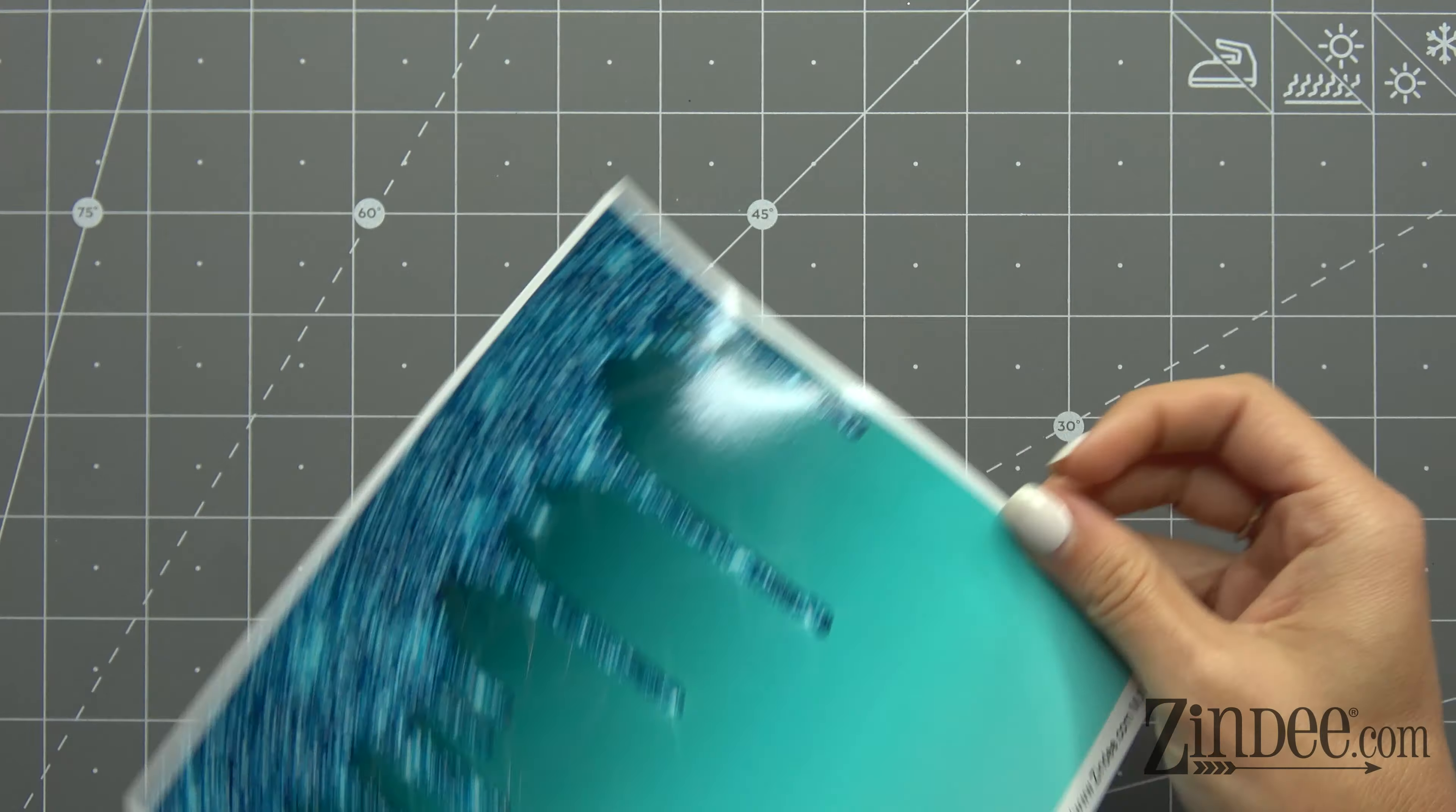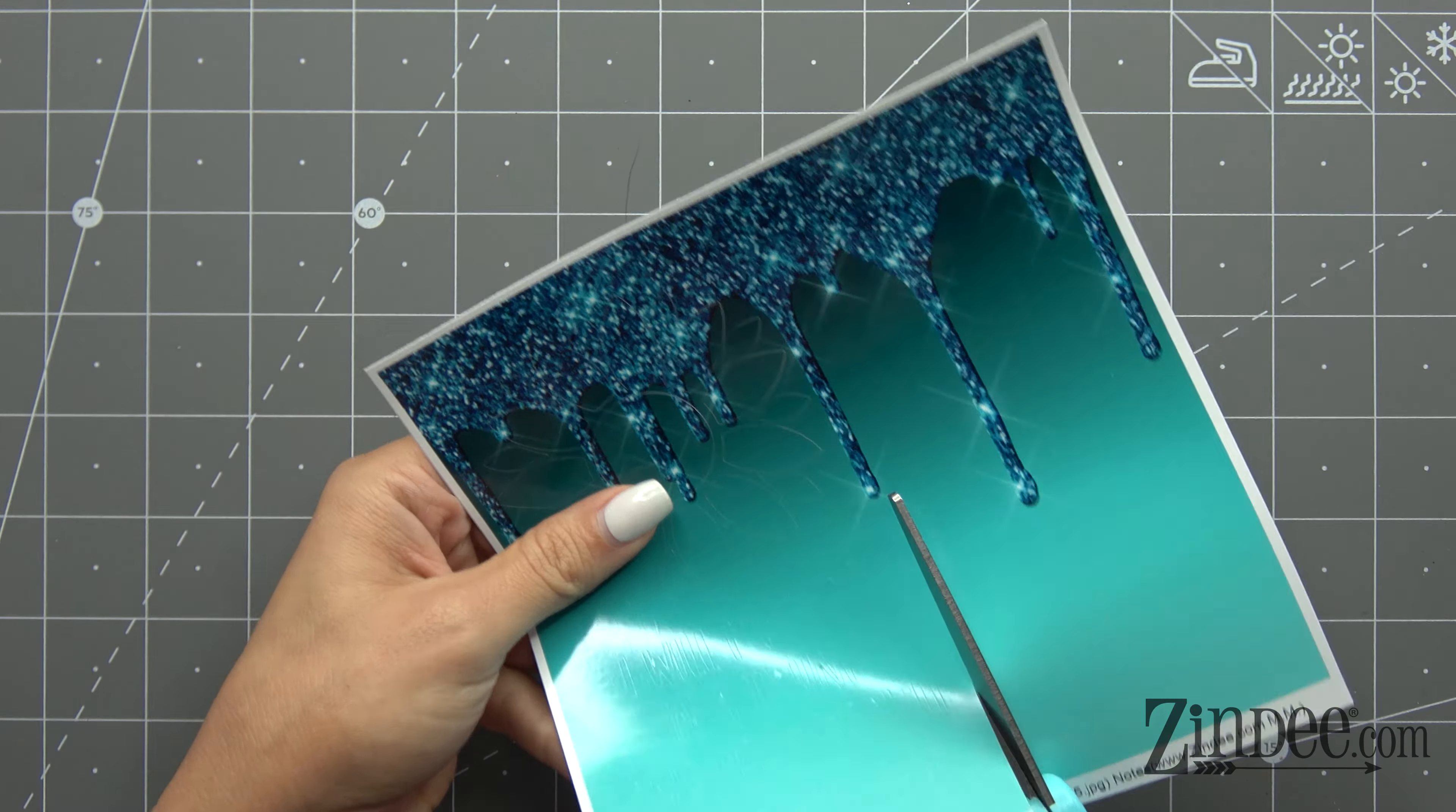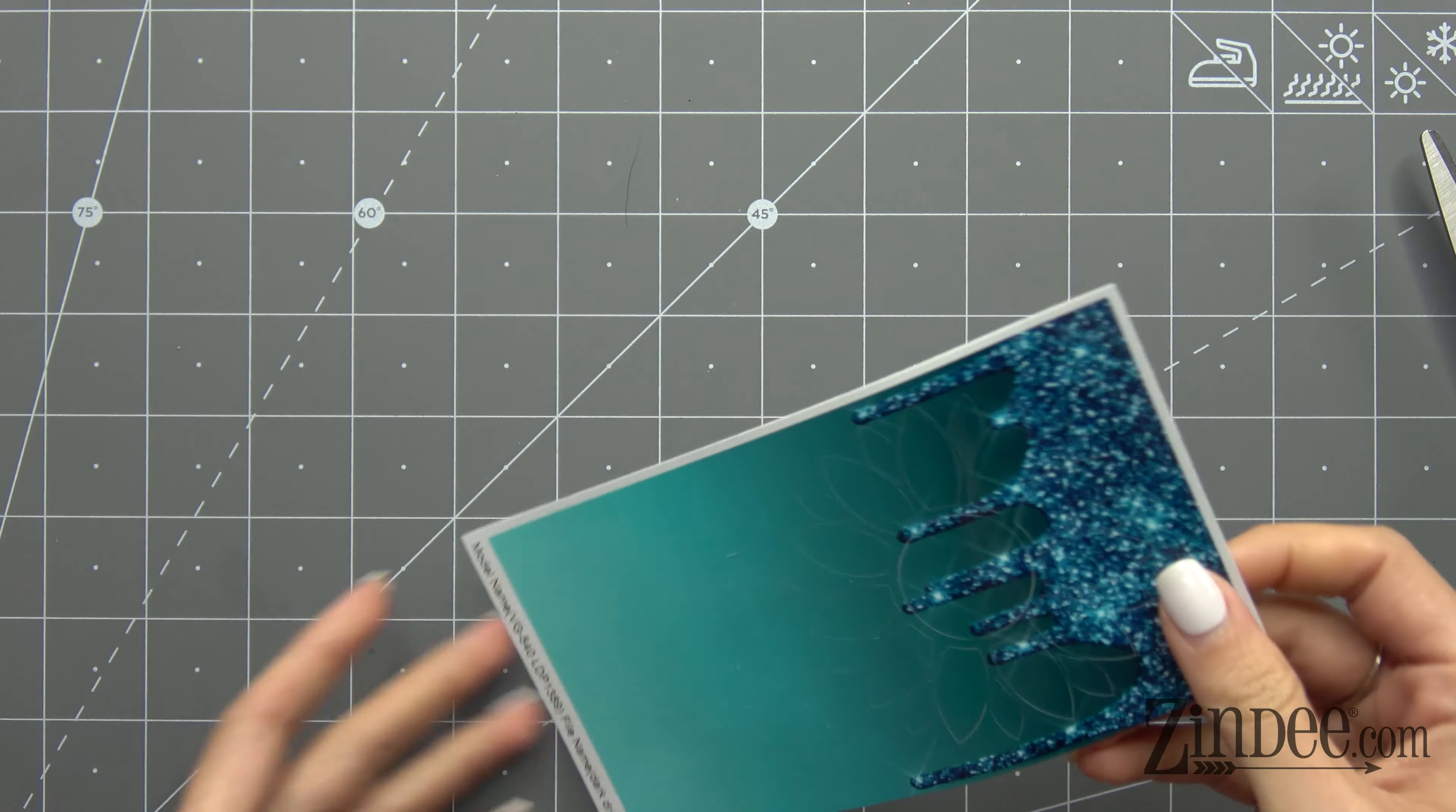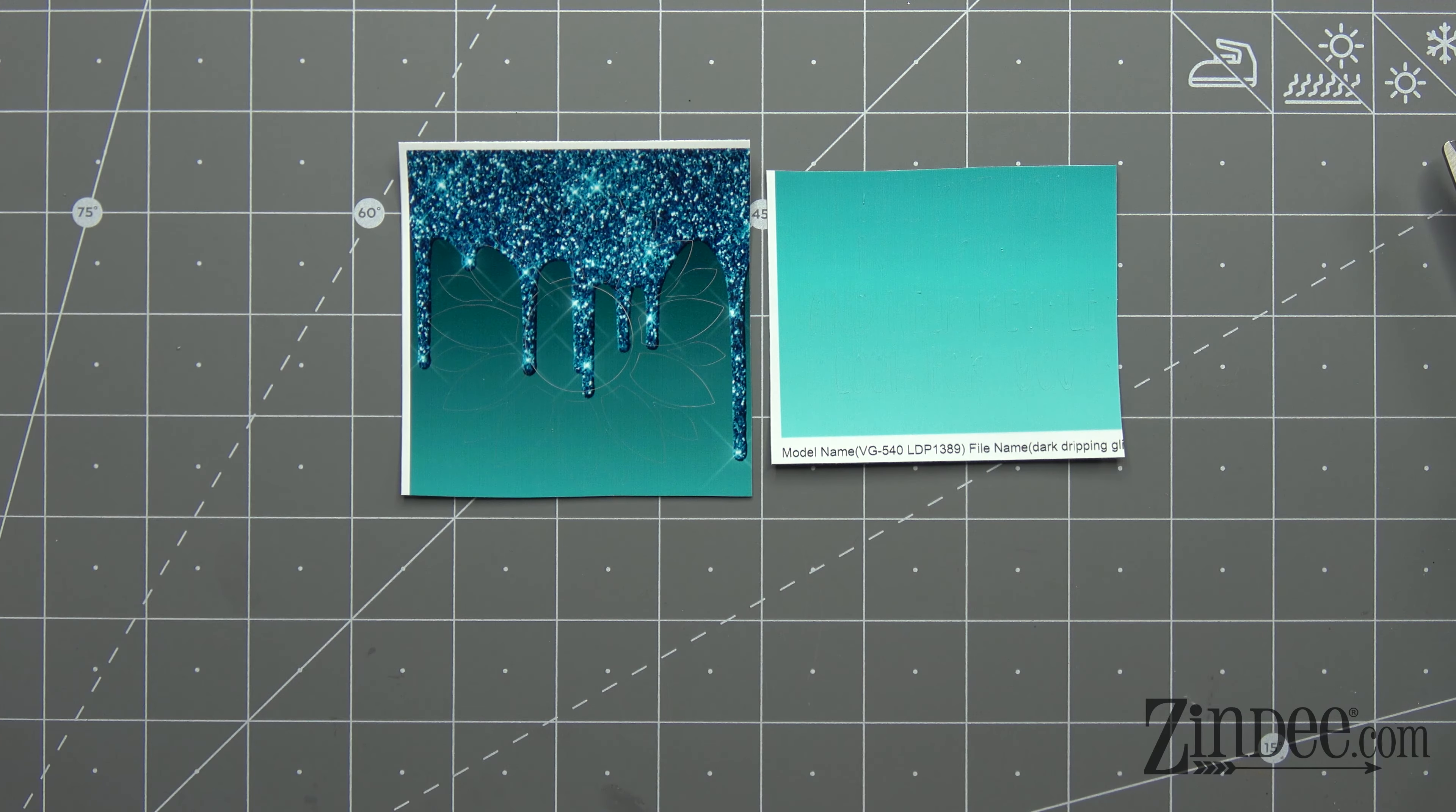So let's go ahead and apply our transfer tape and I'll show you how to actually do reverse weeding. To save this extra vinyl, I don't want to ruin that, so we're going to cut that off and use it for another day. I'm going to cut these two decals apart. So we have our sunflower and then we have our words for the trunk one.